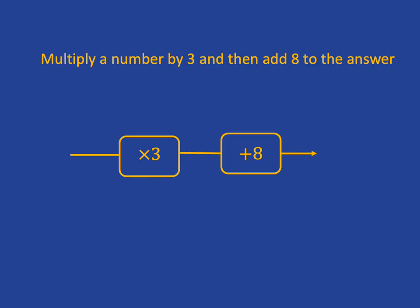Now let's use a number as an example to see how this would work. So if we start with 2 and we feed it through the machine that multiplies by 3, we'll get out 6. Then we take that 6 and feed it through the machine that adds 8, and we'll come up with the answer of 14.